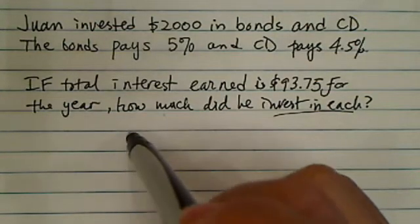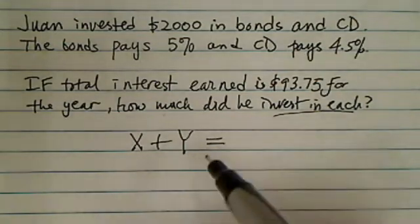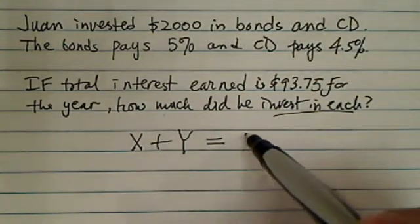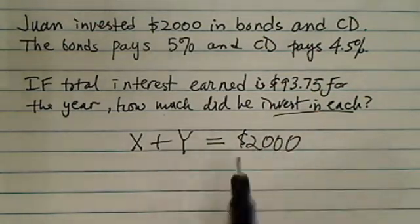This problem actually happens quite often, so what we're going to do is introduce two variables. Let's call one of them a CD and one of them bonds. All together we have $2,000. It doesn't really matter which one is which.